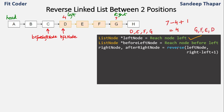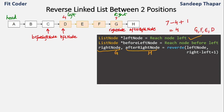This reverse function returns two values: the right node and the after-right node. The right node is the last node in the reversed segment, which is G, and the after-right node is the node after the right index, which is H. So the function reverses the list from D to G and returns pointers to G and H. Once we have those, we need to connect the remaining parts.